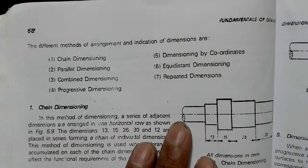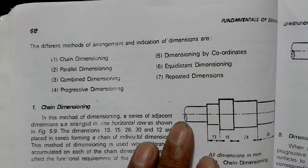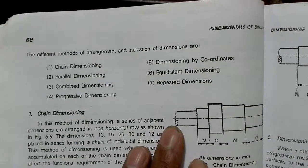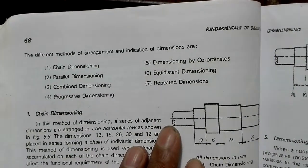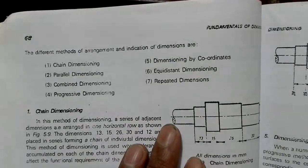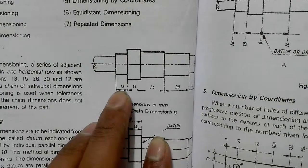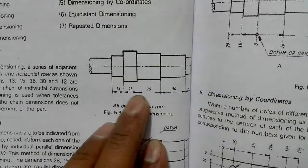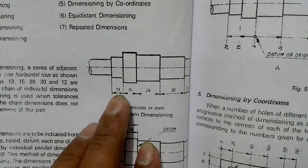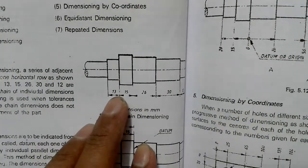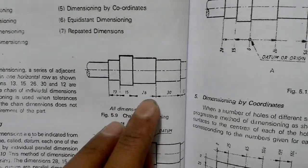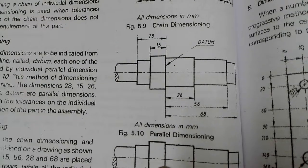There are different methods of dimensioning: chain dimension, parallel dimension, combined dimension, progressive dimension, dimension by coordinates, equidistant dimension, and repeated dimension. In chain dimensioning, dimensions are placed one after another — like links in a chain — all in one direction.